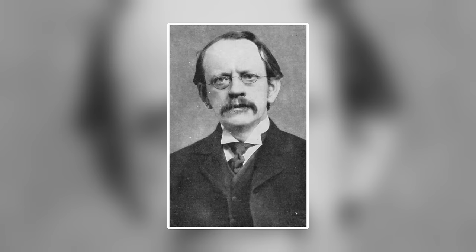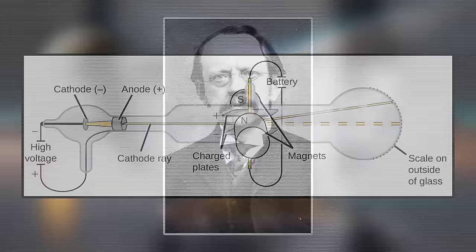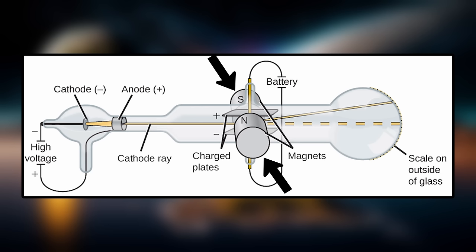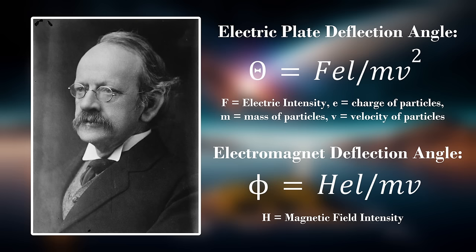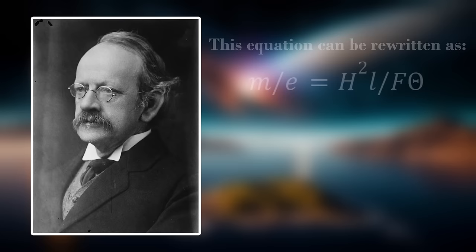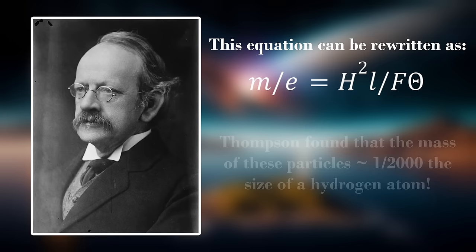While this was a significant discovery, Thomson didn't stop there. He continued to repeat his experiments, but replaced the electric plates with a large electromagnet in such a way that the rays would pass between the two magnetic poles on their way through the tube. The rays bent with this setup as well, and after measuring the angles at which they bent from both electric plates and magnetic poles, Thomson was able to calculate the mass-to-charge ratio of these negatively charged particles. This ratio turned out to be extremely small, and through the math, he found that the size of these corpuscles were one two-thousandth the size of a hydrogen atom.